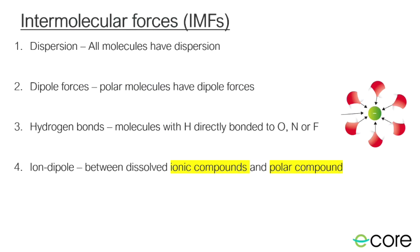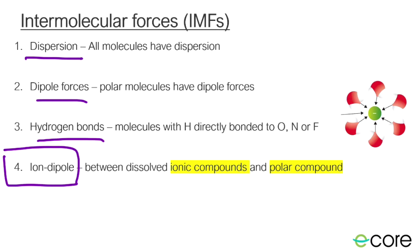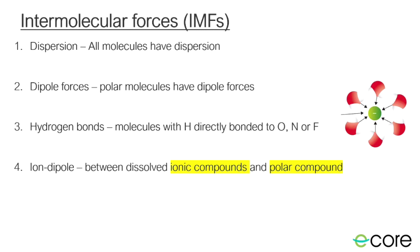So our list of intermolecular forces includes dispersion (all molecules), dipole forces (polar molecules), hydrogen bonds (molecules with H directly bonded to O), and now ion-dipole — a new category that happens when we put an ionic solid into any polar compound. Importantly, the ion-dipole force is the strongest of our intermolecular forces. So if you mix together an ionic compound with something that's polar, you get this new intermolecular force — the ion-dipole — and it's the strongest one.